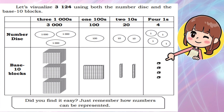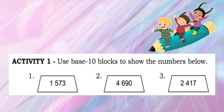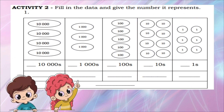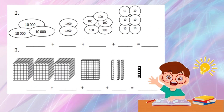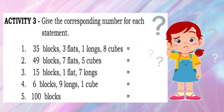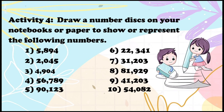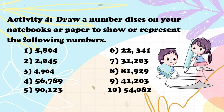Let's visualize 3,124 using both number disks and base-10 blocks. Did you find it easy, children? Just remember how numbers can be represented. Now let's do Activity Number 1: use base-10 blocks to show the numbers below. Next is Activity Number 2: fill in the blanks. Activity Number 3: give the corresponding number for each statement. Activity Number 4: draw a number disk on your notebook or paper to show or represent the following numbers.